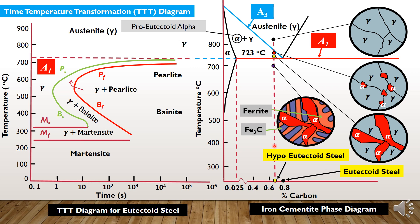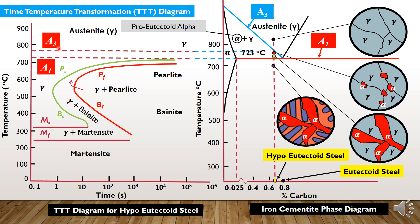Now let's see how the TTT diagram for the hypo-eutectoid steel gets modified. First, the A3 line — the upper critical temperature line — will be added, above which we have only austenite. Because of the formation of pro-eutectoid alpha phase, there will be an additional line above the nose of this diagram. This line indicates the start of austenite transformation to pro-eutectoid alpha and is denoted as Fs.